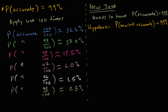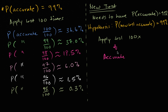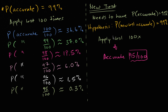So you apply your new test 100 times. You don't know the actual probability of it being accurate, but you use some other super-accurate test to verify your results. You find that it is accurate 95 out of the 100 times. The question is: does the hypothesis make sense? Well, if your hypothesis is true — if the probability of being accurate is 99% — the probability of getting this outcome is only 0.3%.